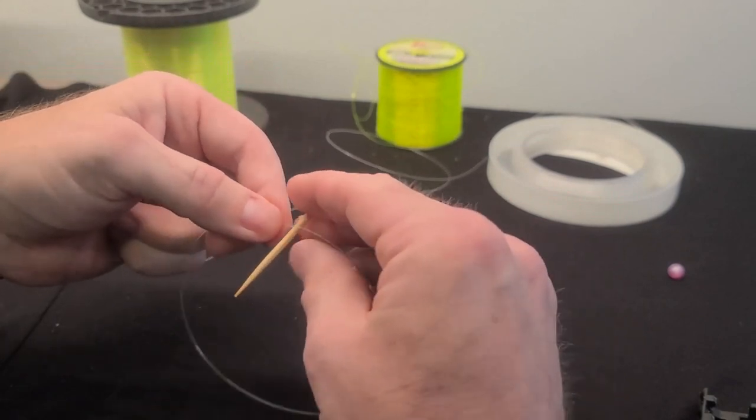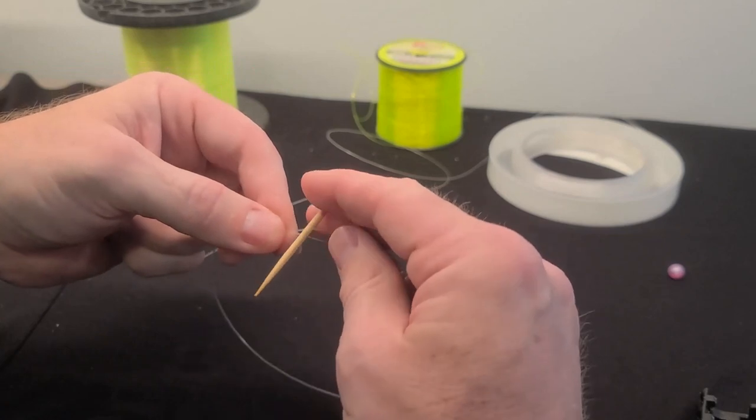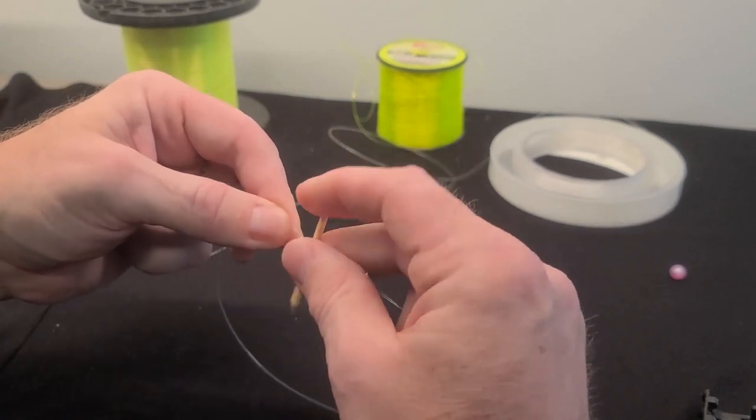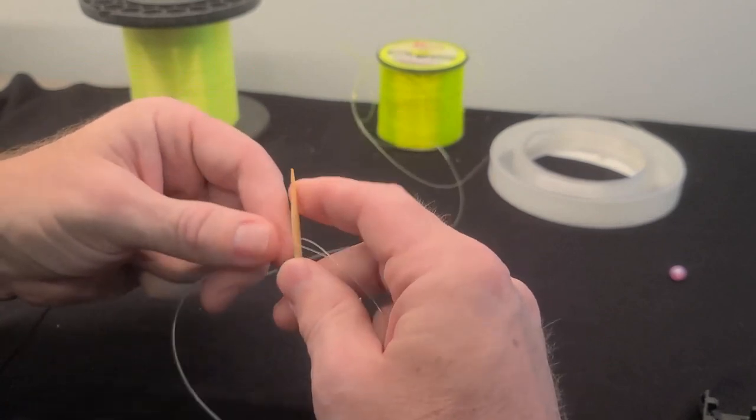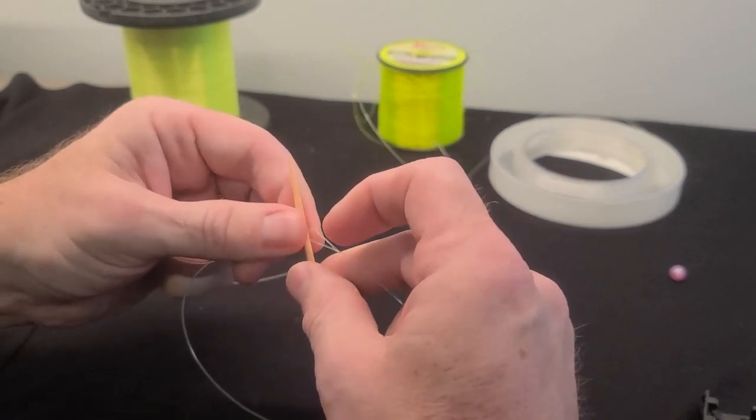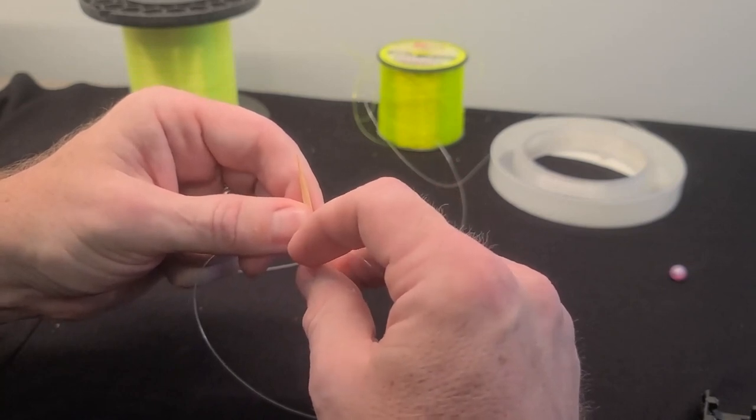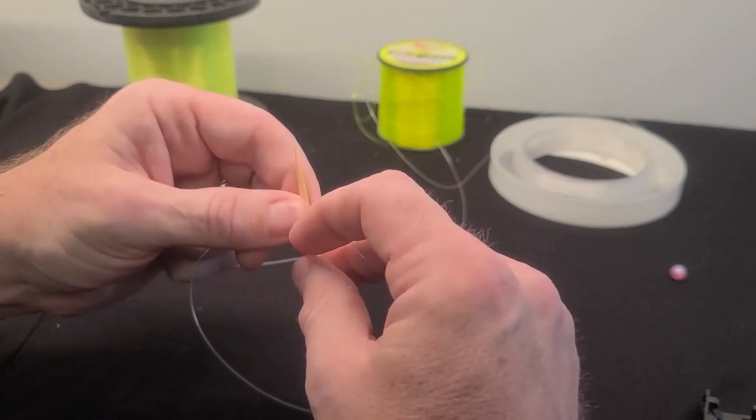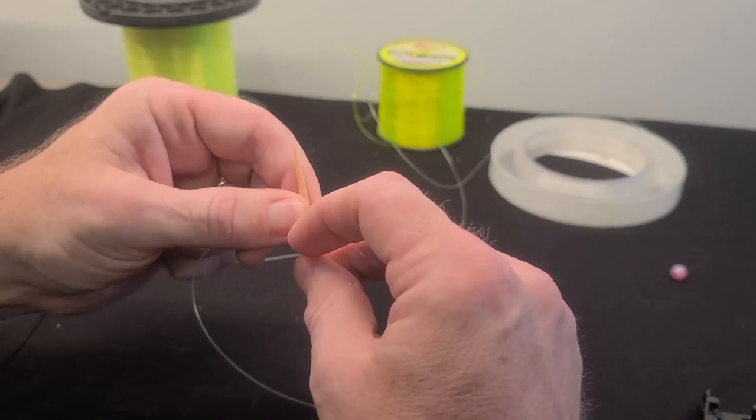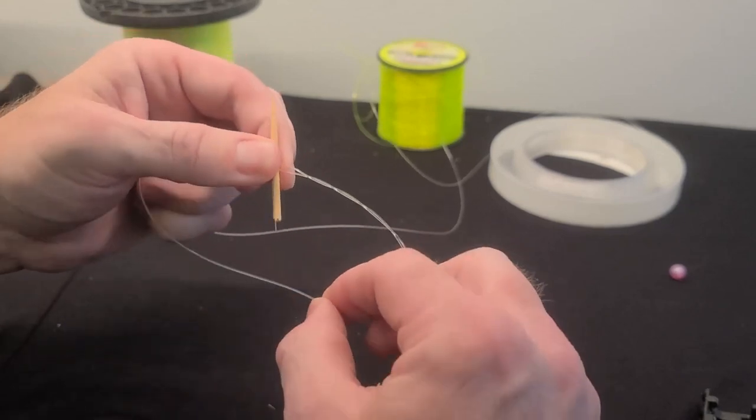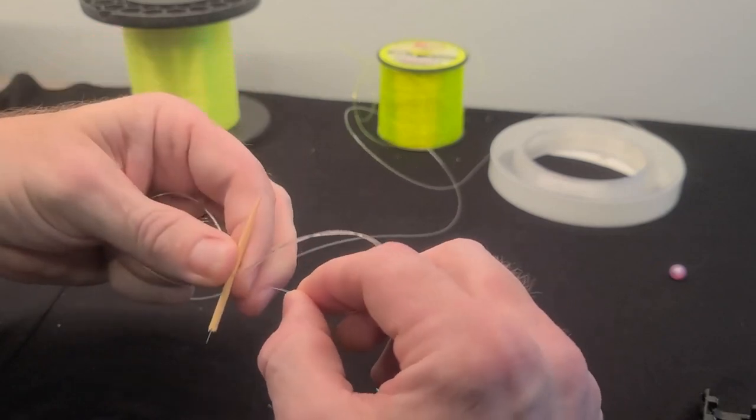So here is where it gets a little tricky. We're gonna hold this in between the two pieces of line and twist: one, two, three, four. We don't want a lot on the fluorocarbon because like I said, it does not like to make really tight knots, especially in the higher pound tests.